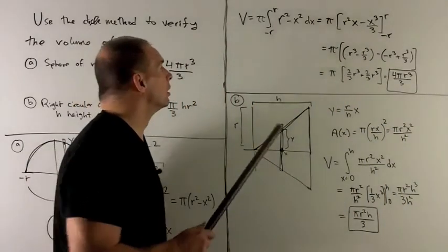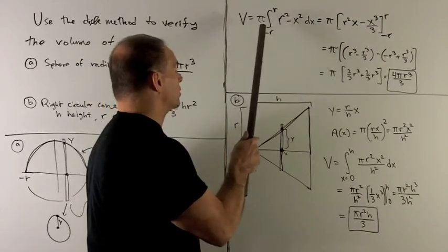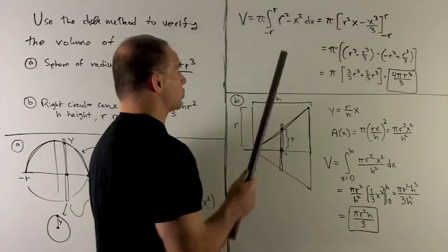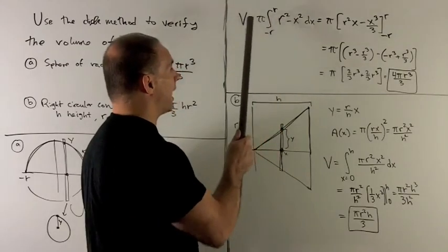Let's see what happens. So we're going to take the volume as the integral from minus r to r. We have pi r-squared minus x-squared for our area. I can pull the pi out in front.